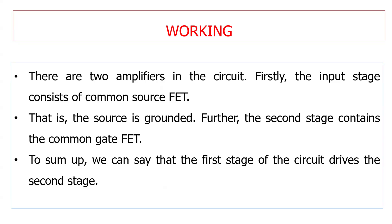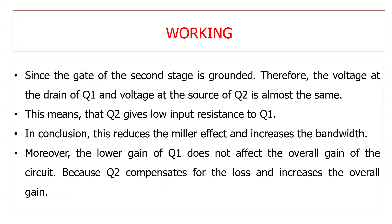The first stage input drives the second stage. Since the gate of the second stage is grounded, the voltage at the drain output of stage one and the voltage at the source of Q2 are almost the same. Q2 gives low input resistance to Q1, which reduces the Miller effect and increases the bandwidth. The lower gain of Q1 does not affect the overall gain because Q2 compensates for the loss and increases the overall gain.